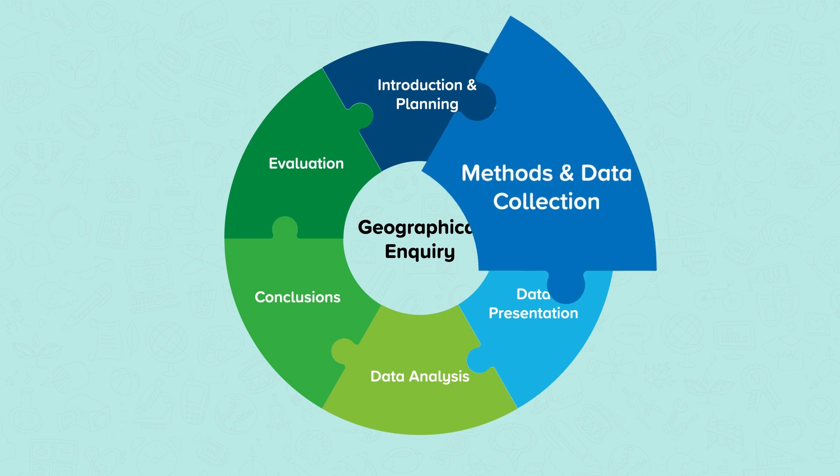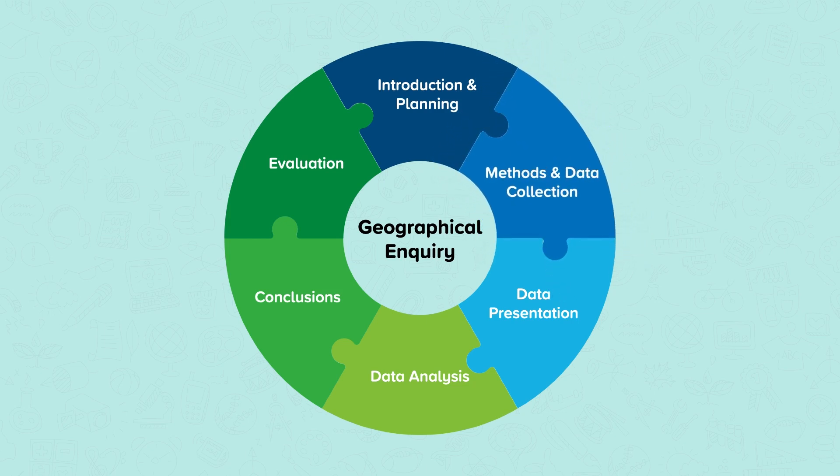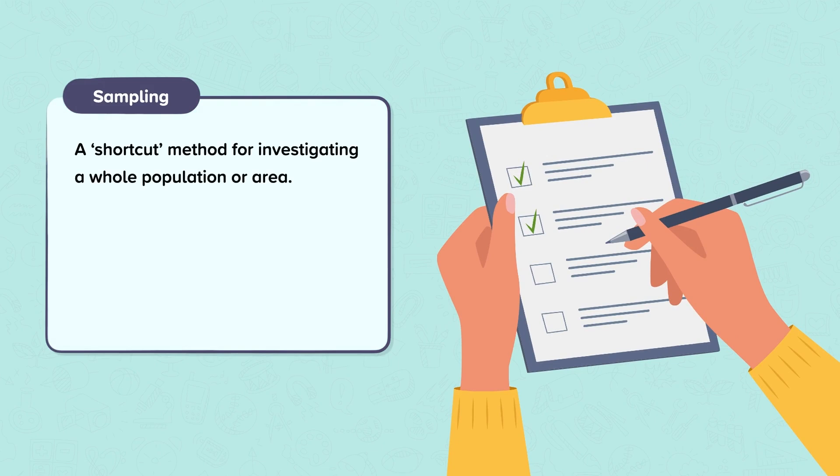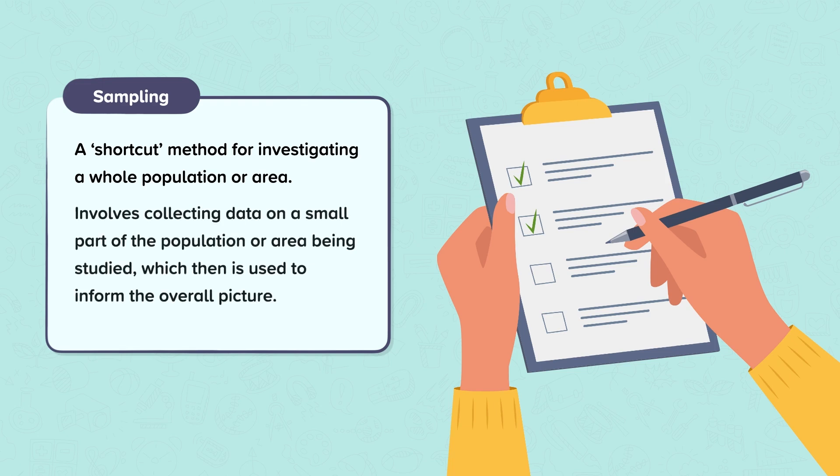A crucial part of the methods and data collection part of the process is sampling. Sampling makes data collection manageable. It is a shortcut method for investigating a whole population or area. It involves collecting data on a small part of the population or area, which is then used to inform what the whole picture is like.